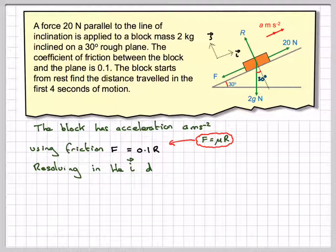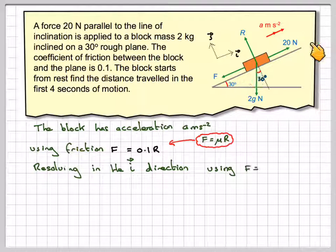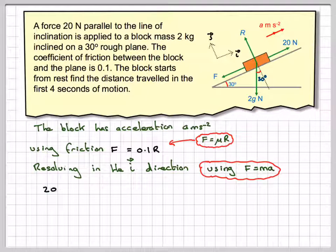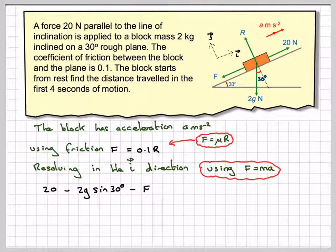Then resolving in the i direction, we're going to have 20 in this direction, and then we're going to have 2g sin 30 degrees, minus it because it's in that direction, minus f. That's going to equal the mass, which is 2 kilograms, times the acceleration we're trying to find.